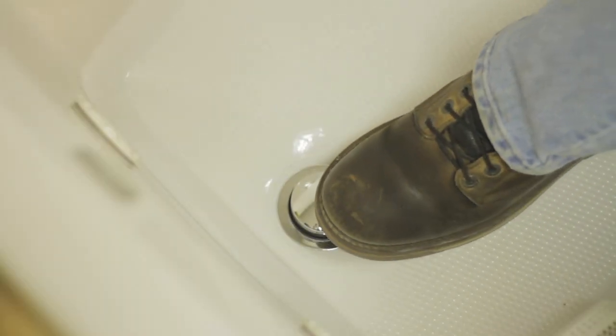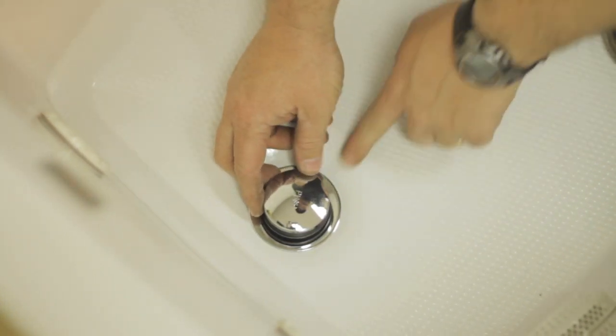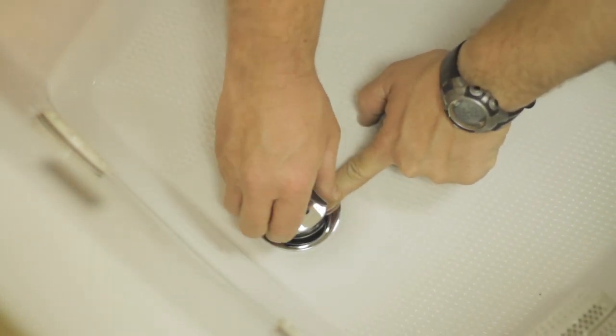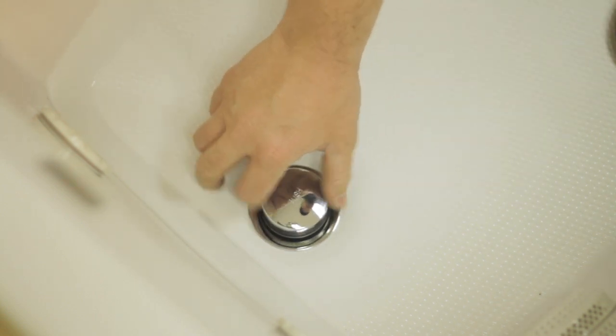Now on a foot lock tub drain, to remove these, typically the top portion here, whether it be chrome, brass, any color, will unscrew.